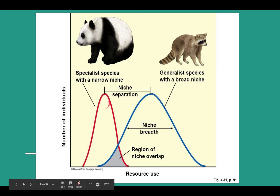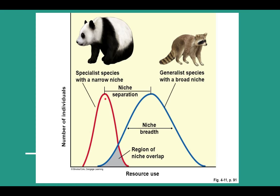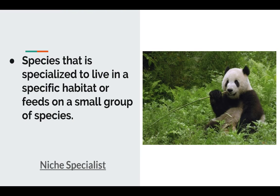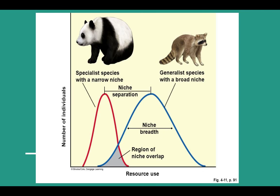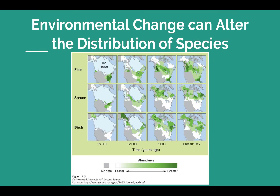We see the challenges of being a specialist happening with the panda now where there's habitat loss — less bamboo forest in China, and the bamboo forest can only live at a certain elevation. As a result, we have this very sensitive species whose populations are declining, where we'd see raccoons succeed in many different types of ecosystems.